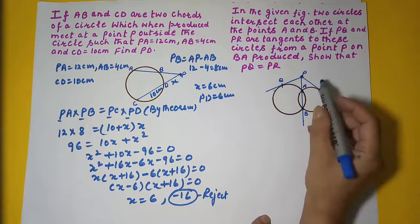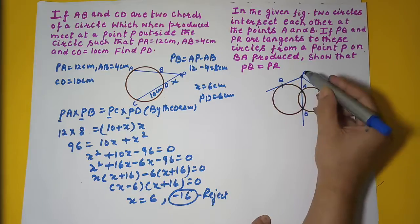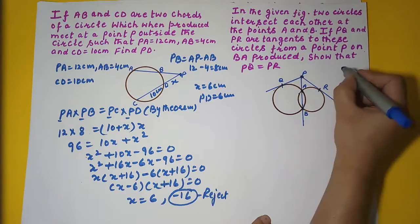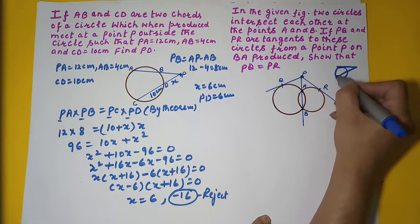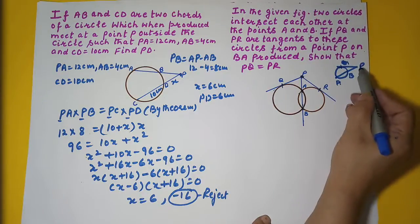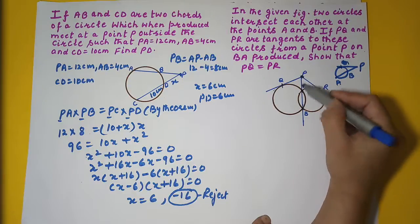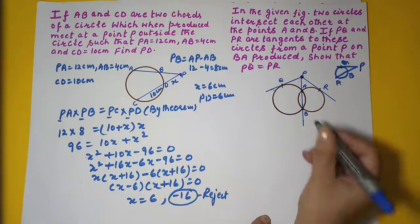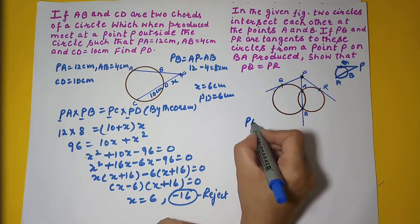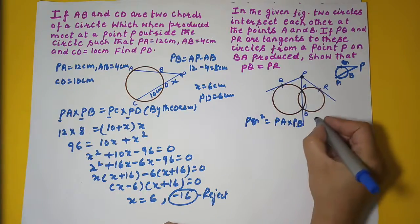Let's forget the smaller circle and look at the bigger circle. In this circle, AB is a chord extended to point P, and from P, PQ is a tangent. By the theorem — when a chord and tangent intersect externally, the square of the tangent length equals the product of the chord's segments — we can write: PQ² = PA × PB. This is equation one, by theorem.